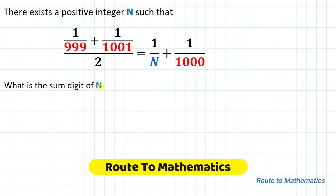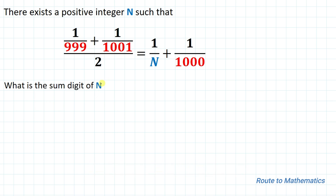Hello everyone, welcome to Root2 Mathematics. In this video we are going to solve this interesting Olympiad question. The given question is: there exists a positive integer n such that (1/999 + 1/1001) / 2 = 1/n + 1/1000. We are asked to find the sum of digits of n. So without any delay let's start the solution.